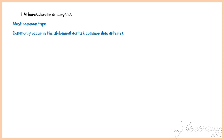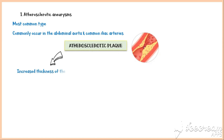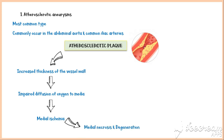Atherosclerotic aneurysms are the most common type, and they are commonly seen in the abdominal aorta and common iliac arteries. Atherosclerosis promotes aneurysm formation by three mechanisms. Atherosclerotic plaques increase the thickness of the vessel wall, which impairs the diffusion of oxygen to the tunica media. As a result, medial ischemia develops, followed by medial necrosis and degeneration, and ultimately the arterial wall becomes weaker, predisposing to aneurysm formation.